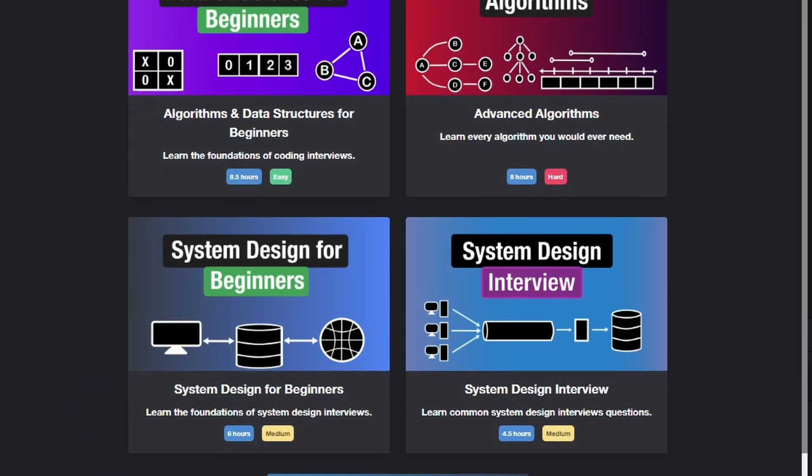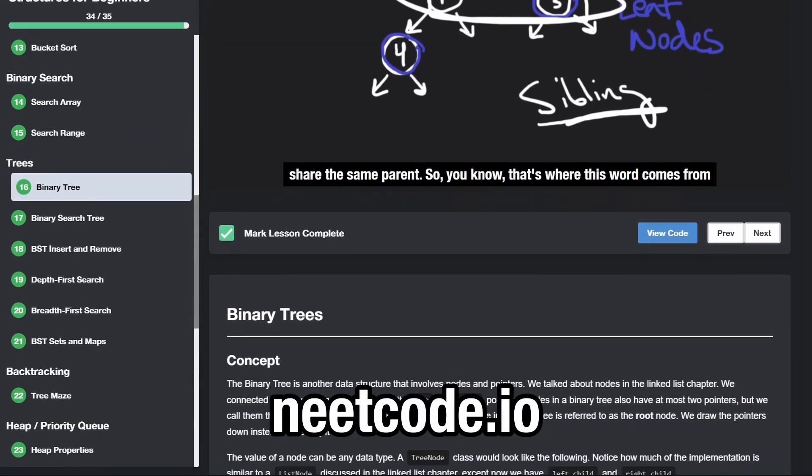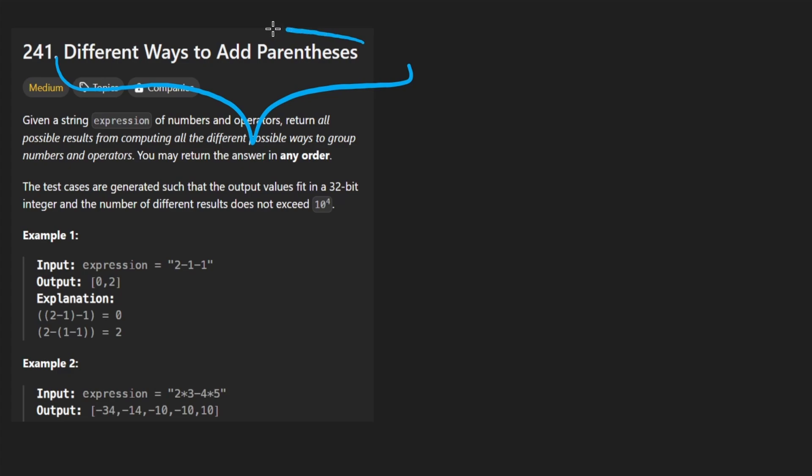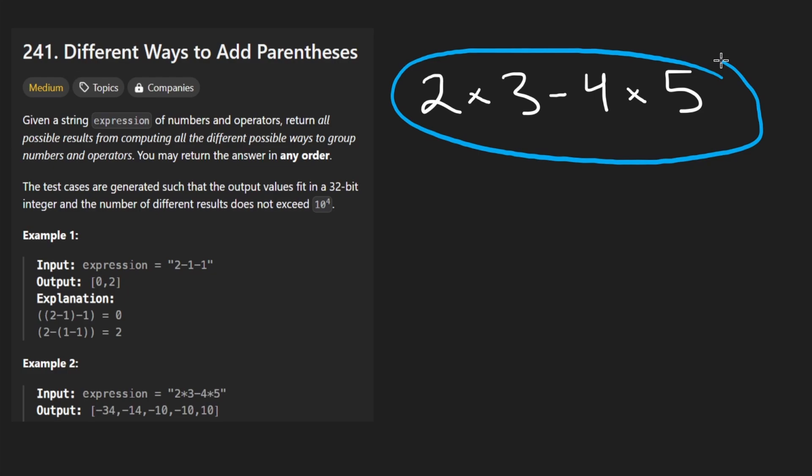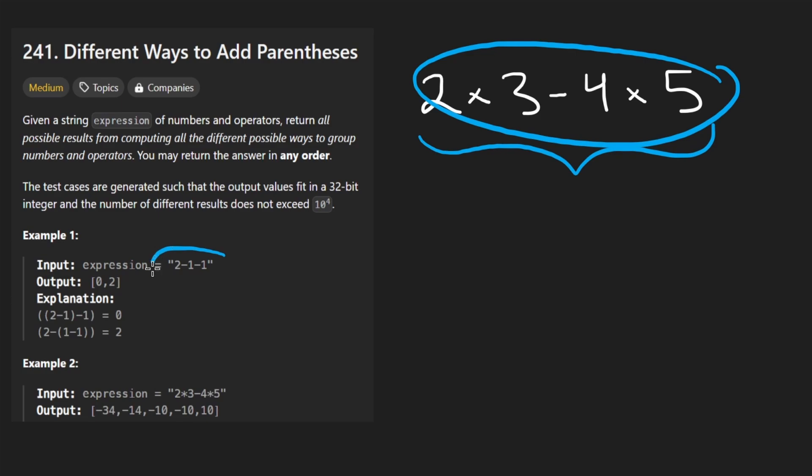Hey everyone, welcome back and let's write some more neat code today. I actually really enjoy this problem, so let's get into it. Different ways to add parentheses. So the idea is we're given some kind of arithmetic expression and just to kind of clarify the requirements or the constraints up front, the input is guaranteed to only contain the operators which are plus, minus, as well as multiplication. We're not doing any division.